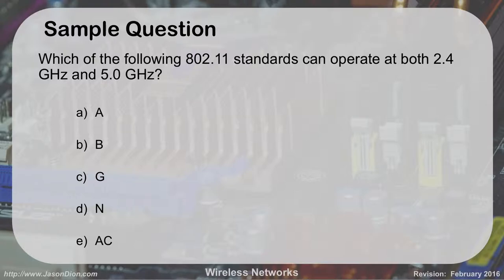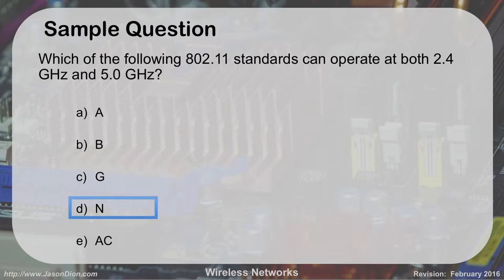Here's a sample exam question: Which of the following 802.11 Wi-Fi standards can operate at both 2.4 and 5 GHz — A, B, G, N, or AC? The answer is N. N was the dual-band standard. A operates at 5 GHz. N and AC both operate at 5 GHz. B, G, and N all operate at 2.4 GHz. You've got to know those frequencies because those are the types of questions you'll see on the exam.